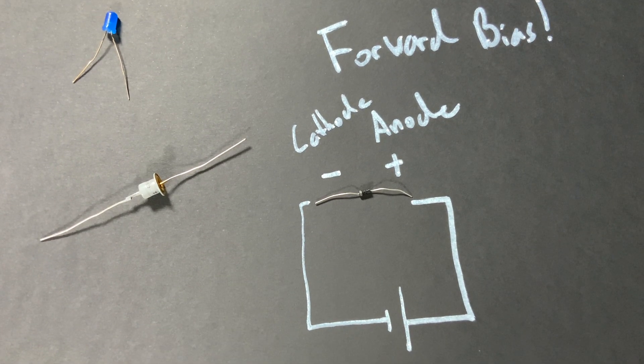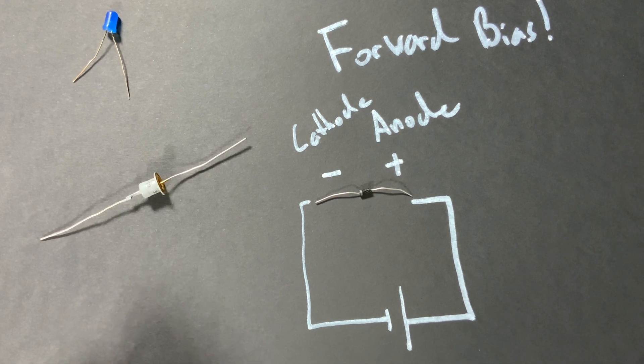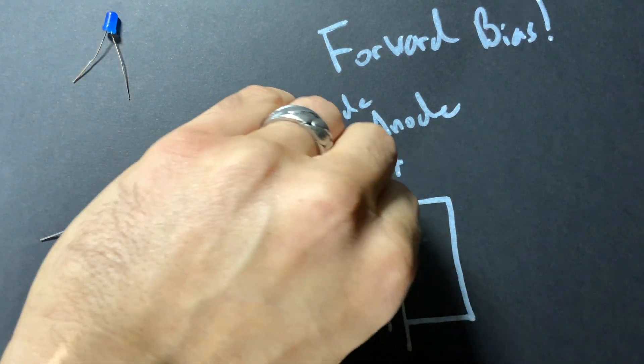Obviously if I wanted to do this in reverse bias all I would have to do is take this component out and flip it around.